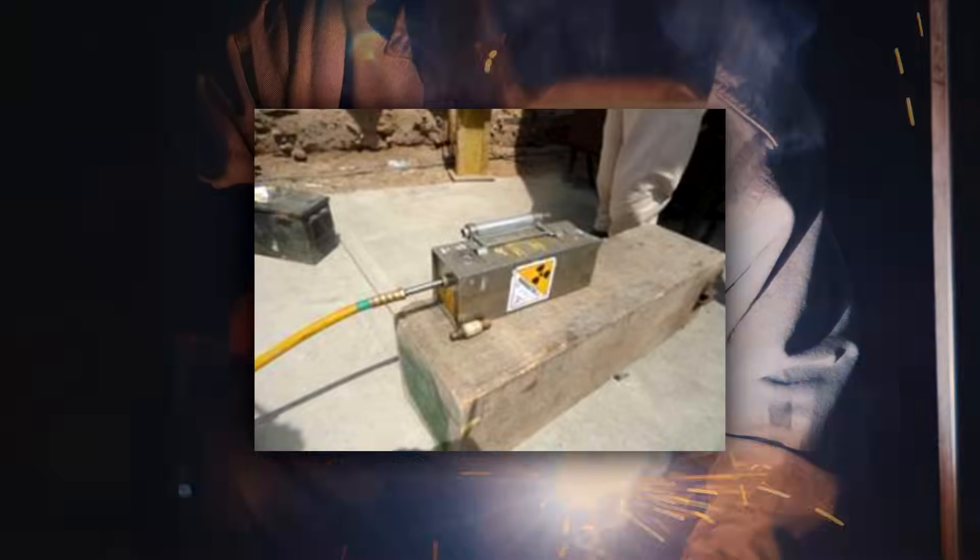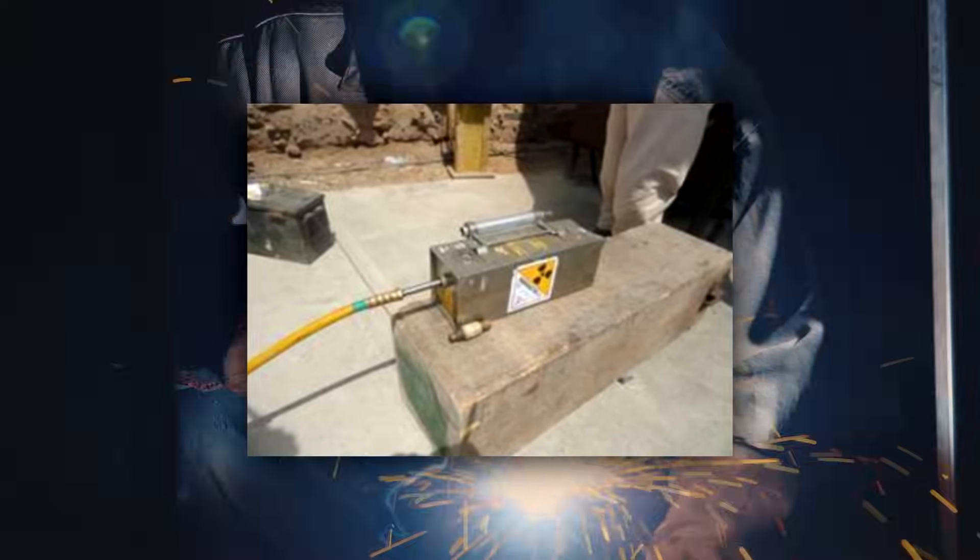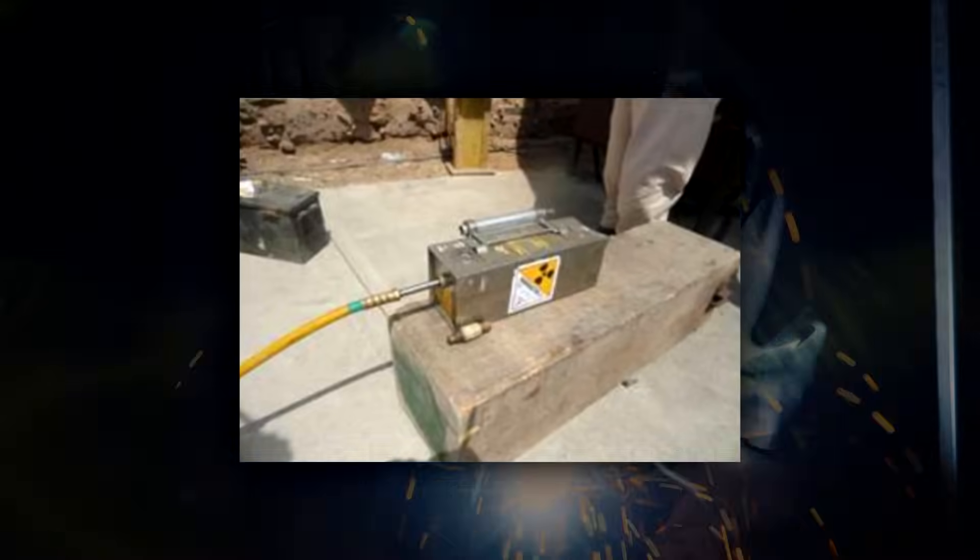However, by lunchtime the welders still weren't finished, so the radiographers went away, leaving the equipment unattended. At 2 PM the welders came back from lunch and resumed their repair work. At around 4 PM one of the welders found a short braid of metal wire on the ground. He picked it up and placed it into the back right pocket of his jeans. Then he climbed inside the pipe and resumed welding.